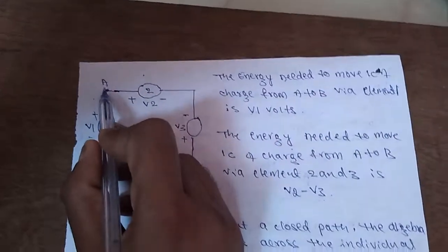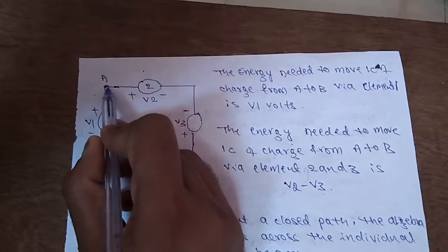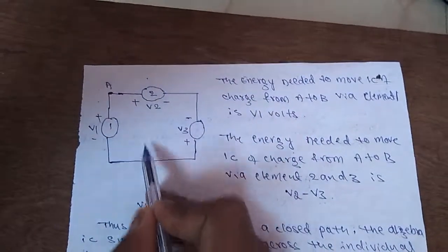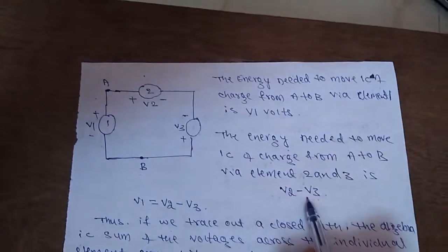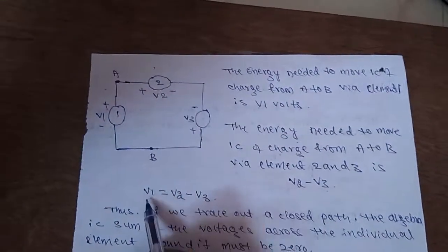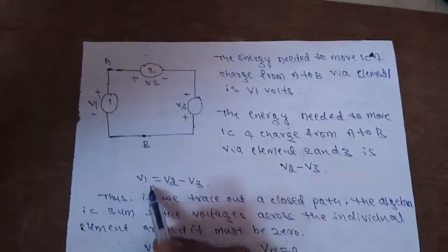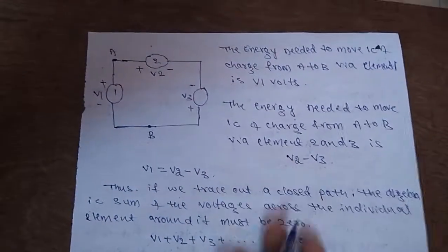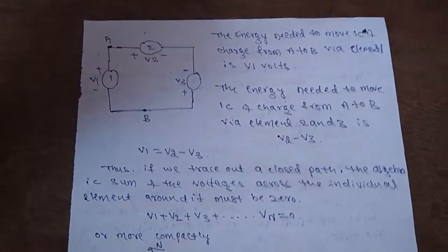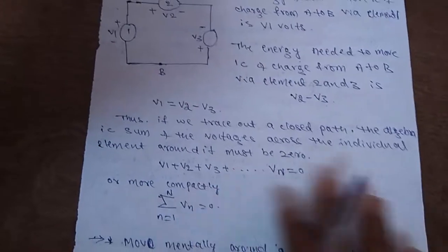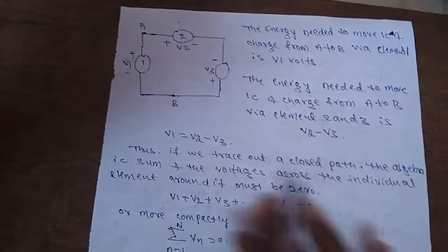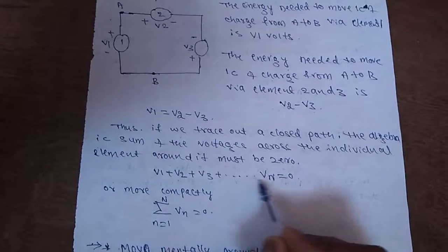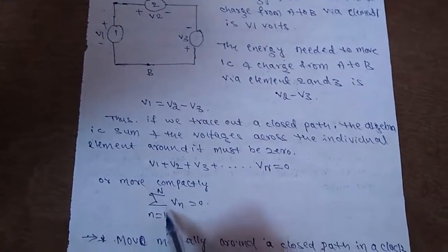That is, the amount of energy needed to move a unit charge from point A to point B, through V2 and V3 is given by V2 minus V3. By conservation of energy, these two should be equal. So that V1 will be equal to V2 minus V3. This is what Kirchhoff's voltage law states. And this can be generally written as V1 plus V2 plus V3. Summation of Vn will be equal to 0.